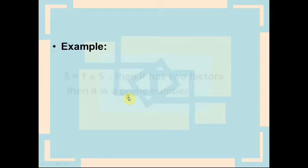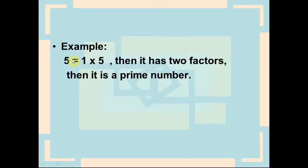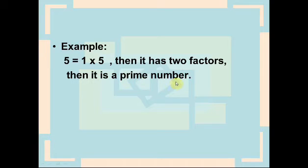For example, 5 is a prime number because its factors are 1 and 5 only. It has only two factors, so it is a prime number.